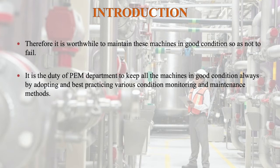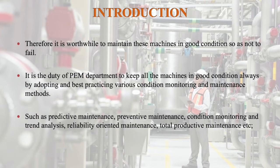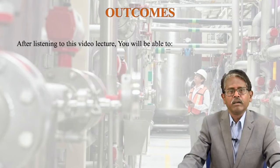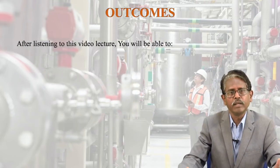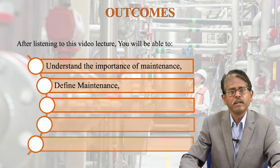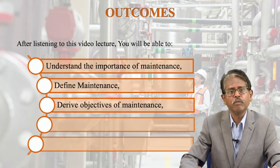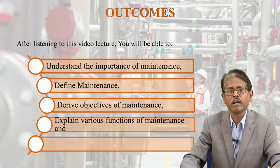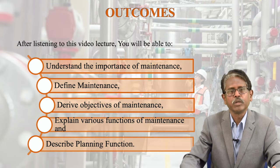Such methods include predictive maintenance, preventive maintenance, condition monitoring and trend analysis, reliability oriented maintenance, total productive maintenance, etc. After listening to this video lecture you will be able to understand the importance of maintenance, define maintenance, derive objectives of maintenance, explain various functions of maintenance, and describe the planning function. These are the outcomes or objectives you are going to learn in this unit.